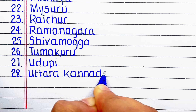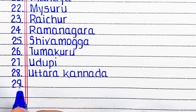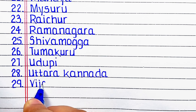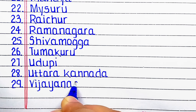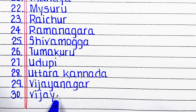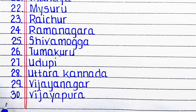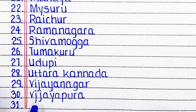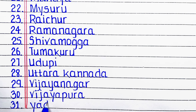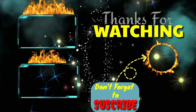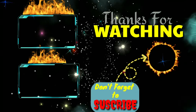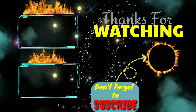Next district is Uttara Kannada. Next is Vijayanagar. Next district is Vijayapura. Last and the 31st district of Karnataka in our list is Yadgir.